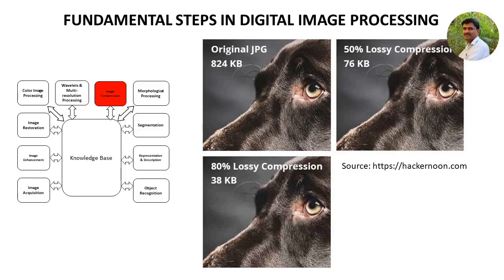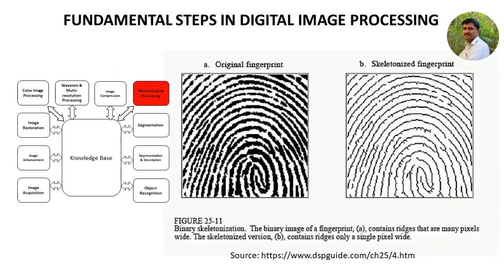Another fundamental step is image compression. Image compression is minimizing the size in bytes of a graphic file without degrading quality — lossless compression — or with acceptable degradation — lossy compression. Image compression saves disk space for storage and time for transmission. Morphological processing deals with developing tools for extracting forms and structures of image regions. The image components generally used for describing region shapes are boundaries and skeletons. The process involves erosion, dilation, opening, and closing.